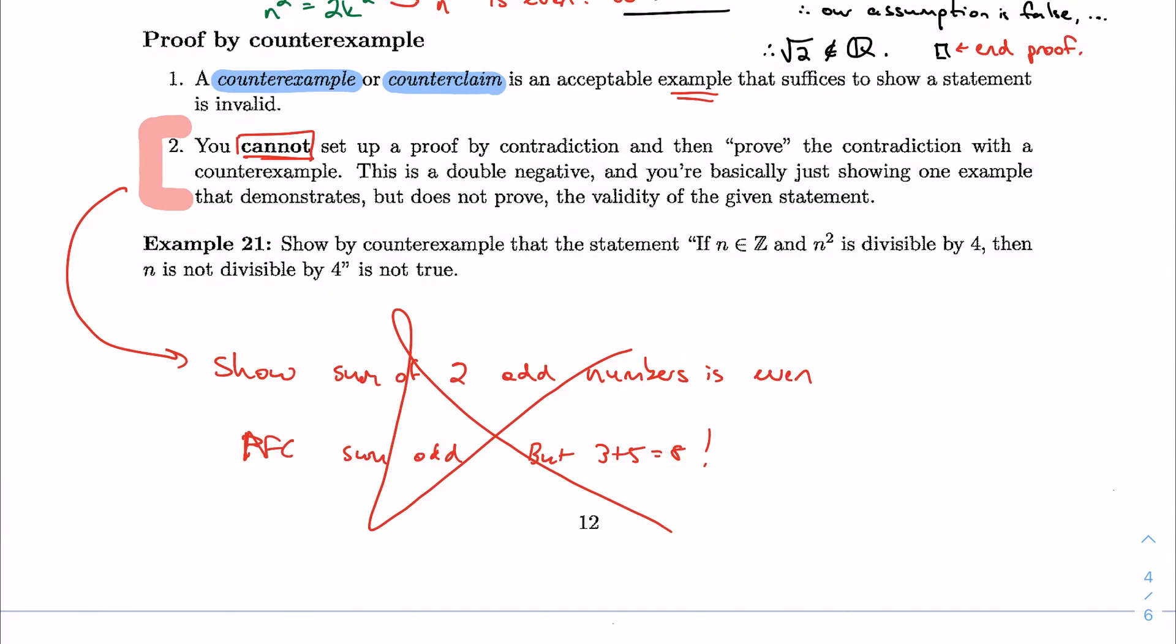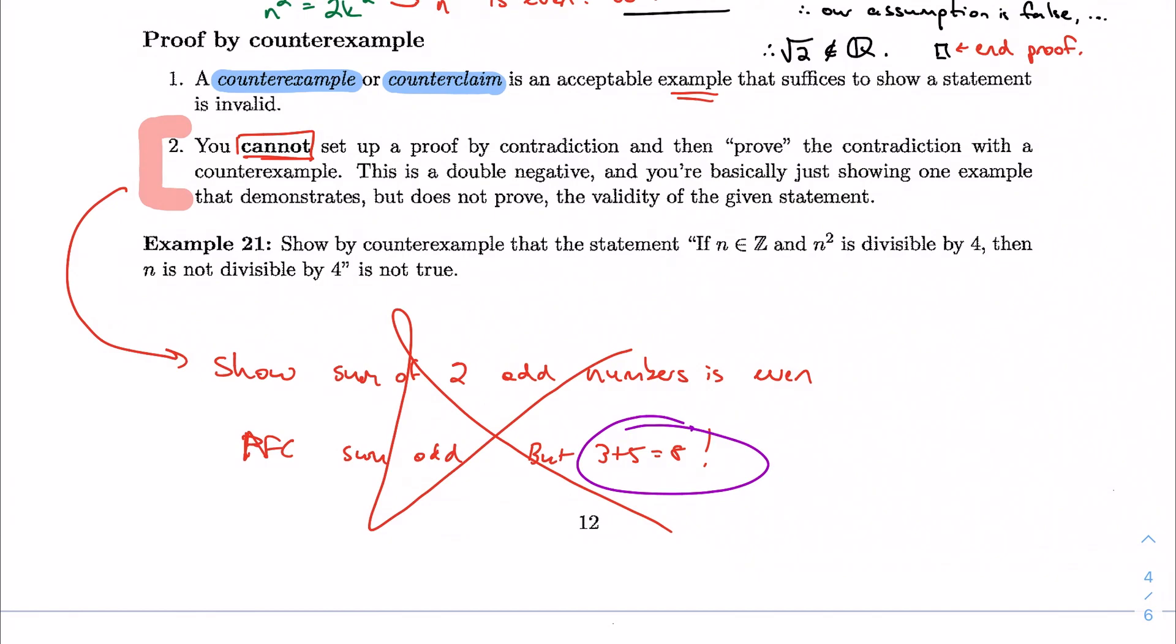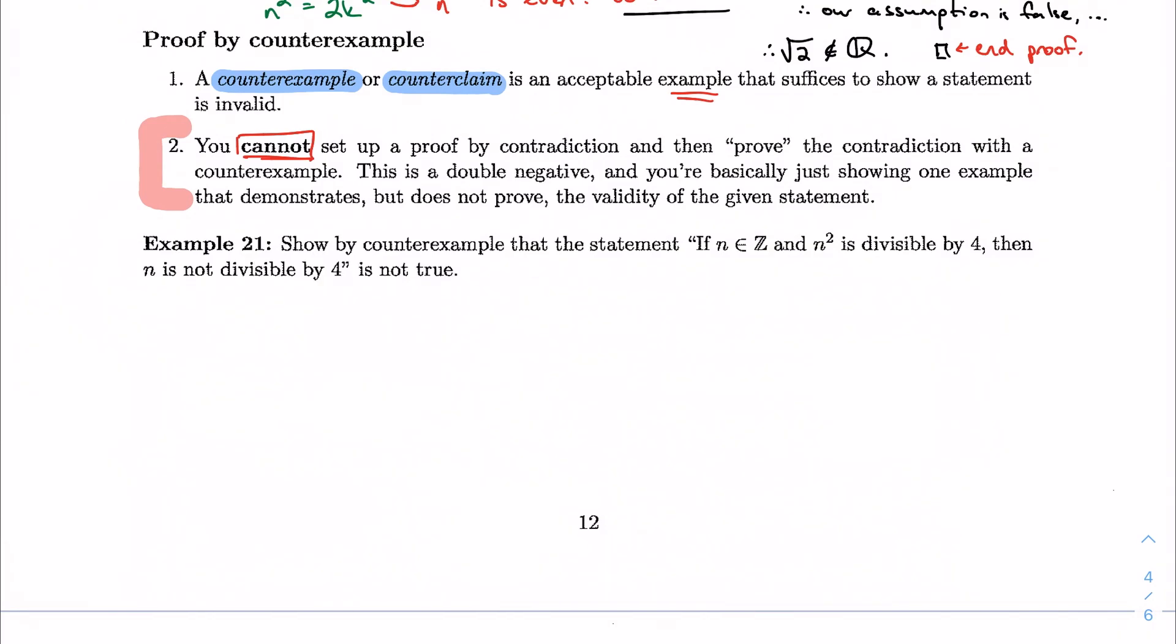No, no, because then all this example does is just demonstrate the validity of my original statement, and that's not a proof, that's just an example. Right, so it's kind of a double negative. So no, don't ever do that.